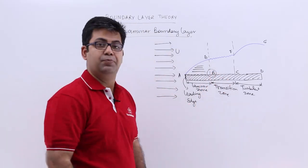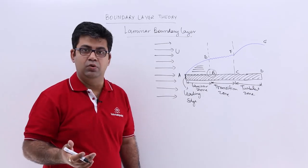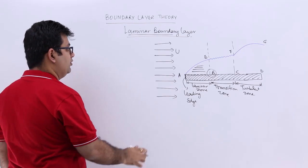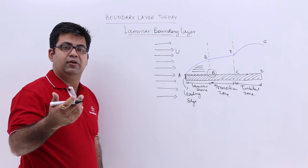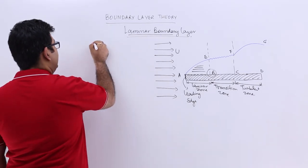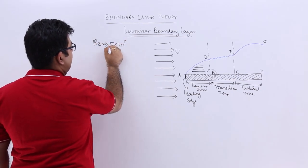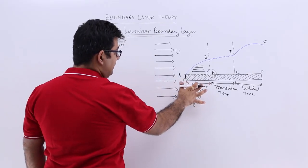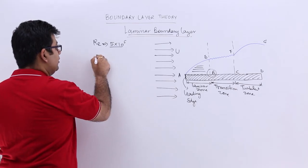Up till point B, the boundary layer is laminar in nature. The Reynolds number is the number which governs whether your flow is laminar or turbulent. For a plate, the Reynolds number for laminar flow should not be more than a certain value.